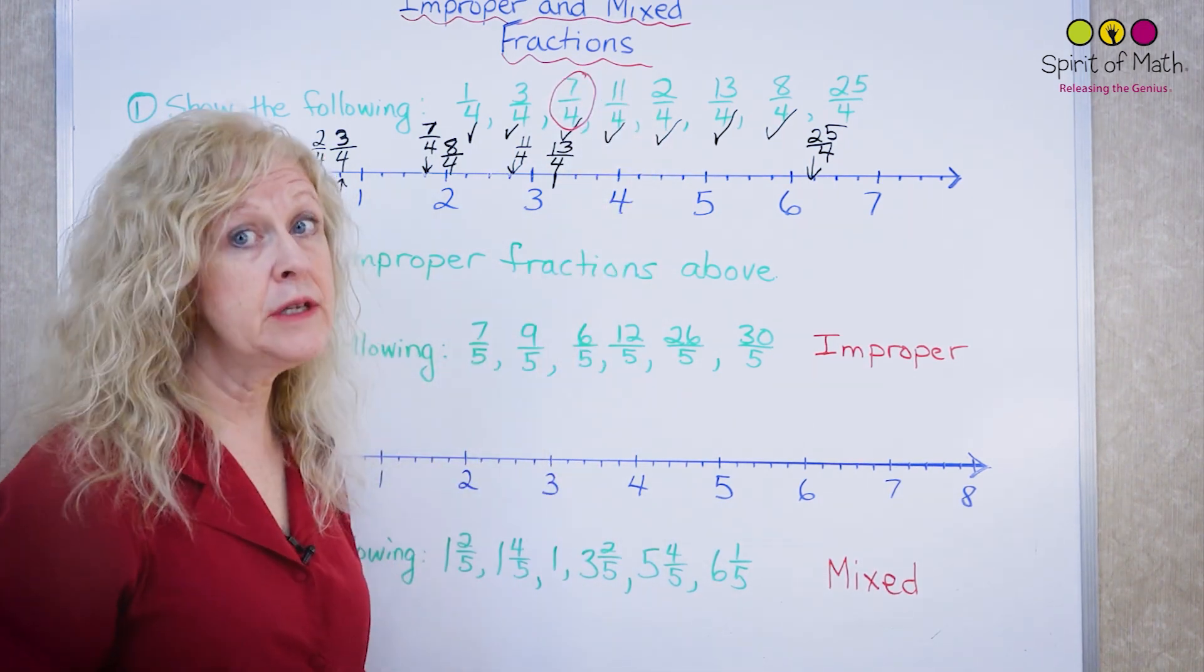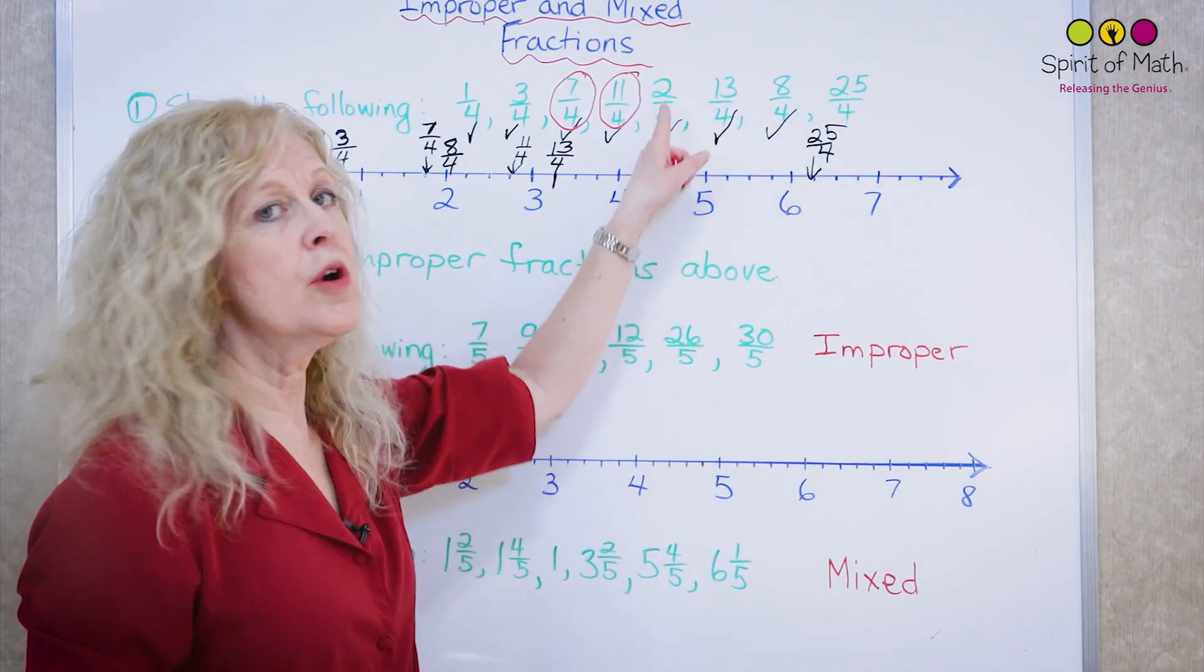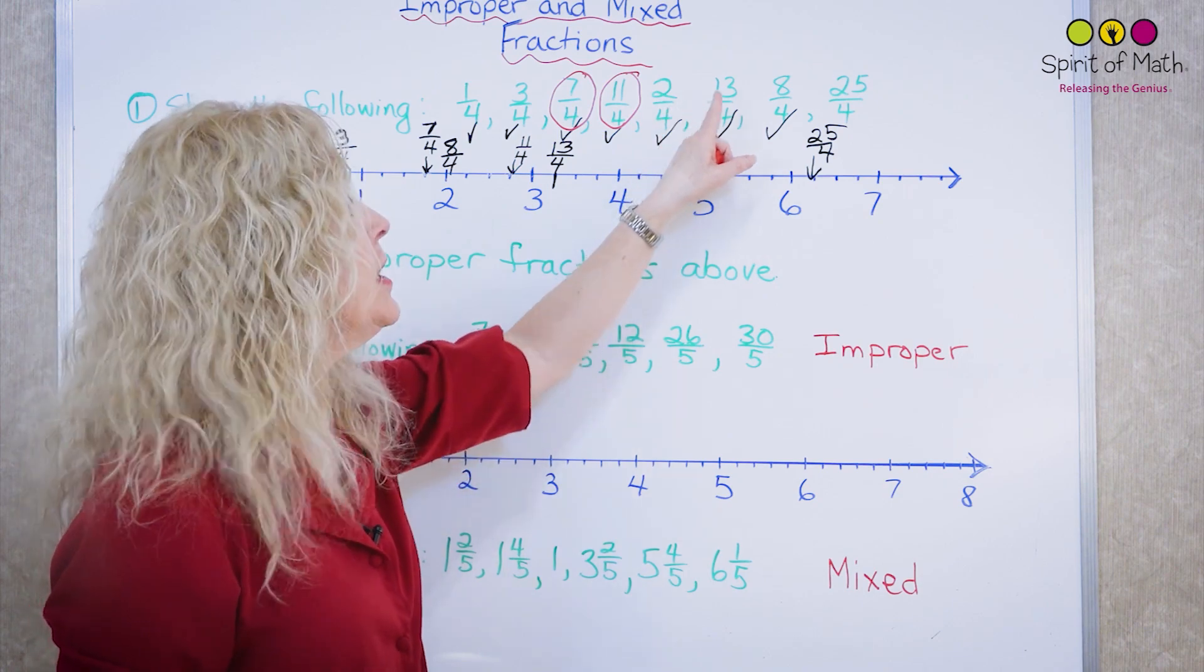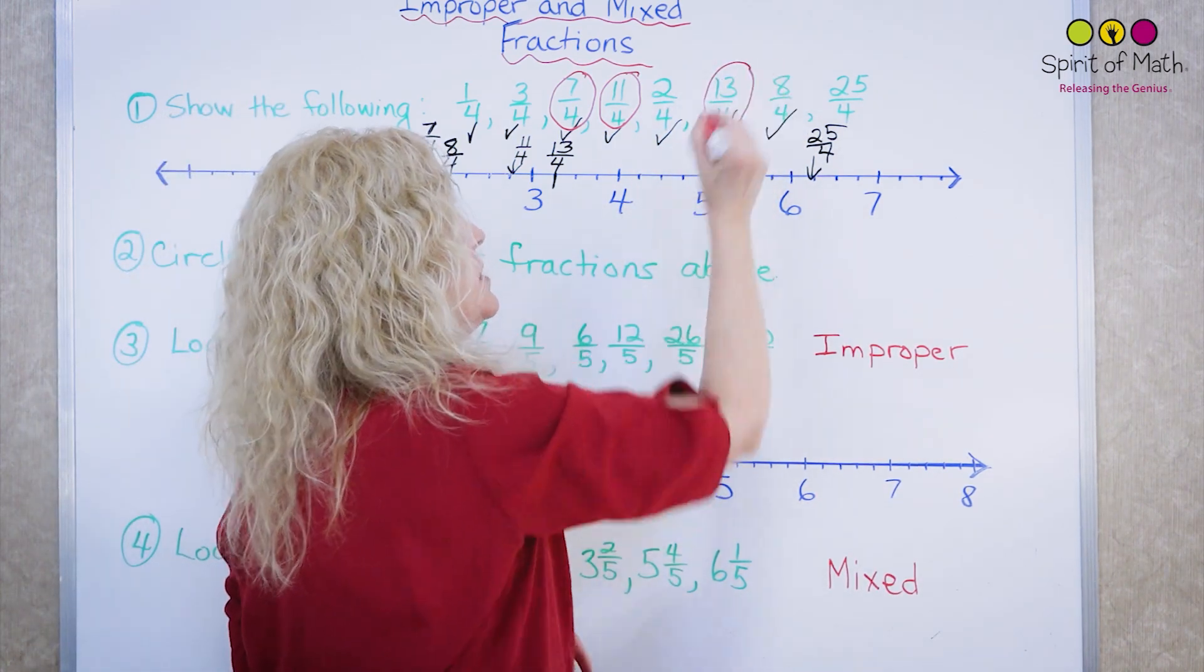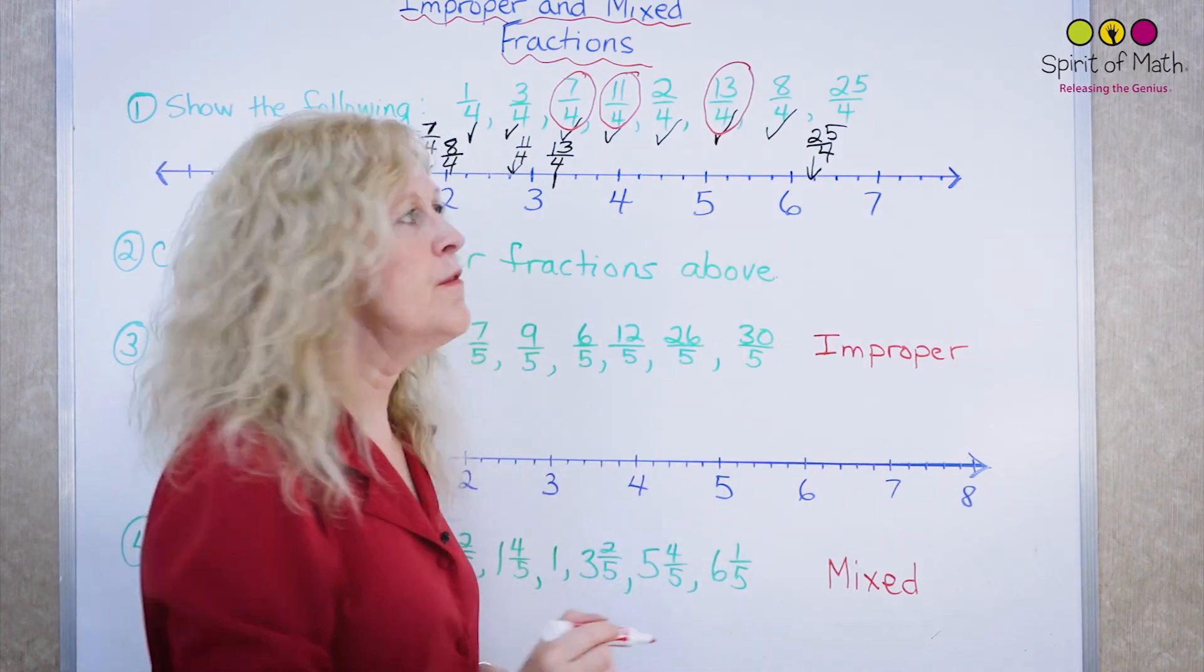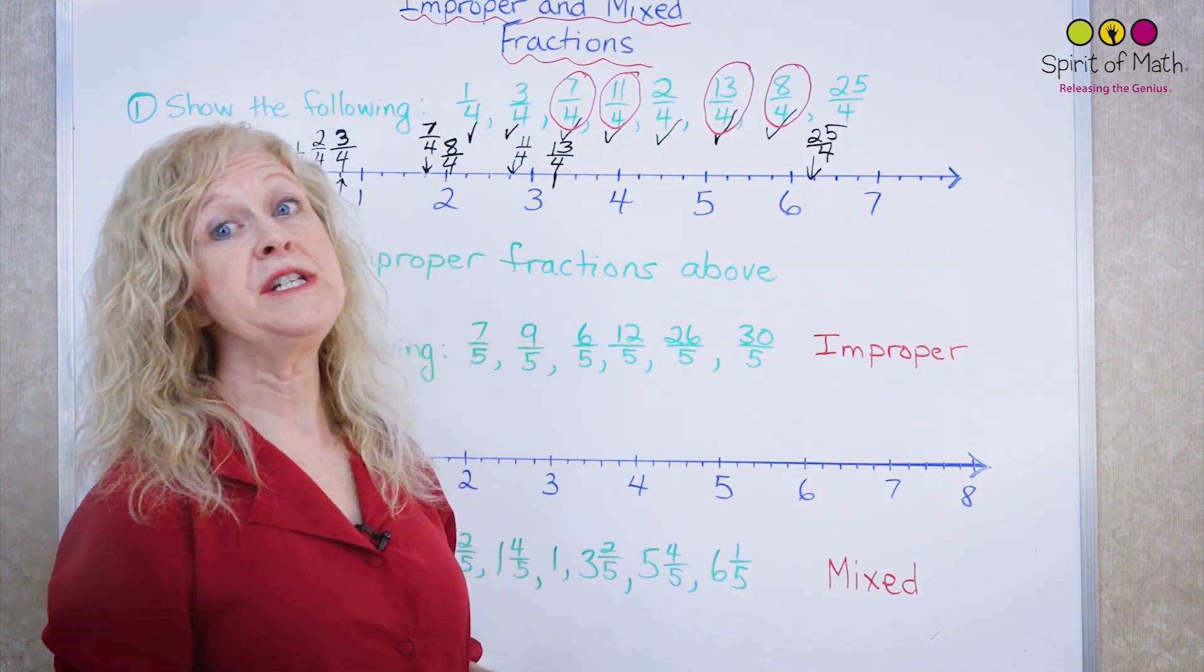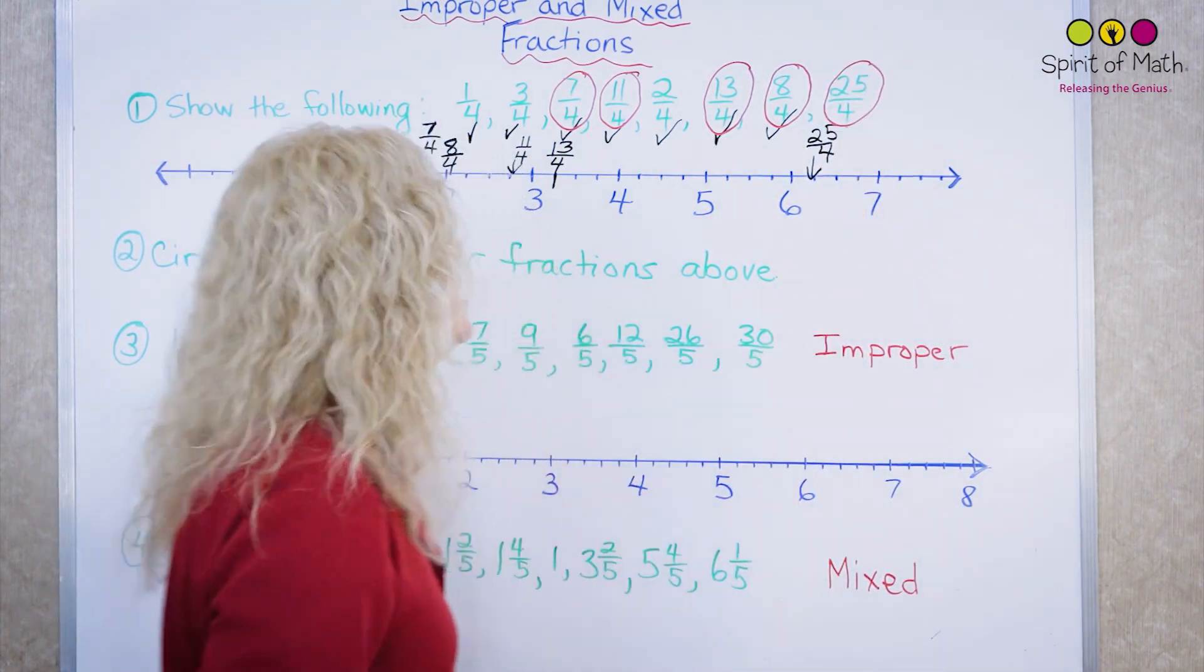Eleven quarters, that eleven is bigger than the four, so it's improper. Two quarters, that two is smaller than the four, so it's not improper. Thirteen over four, that thirteen is larger than the four, so it's improper. Eight over four, it's improper. Eight is larger than the four and twenty-five over four is improper. That twenty-five is larger than the four.